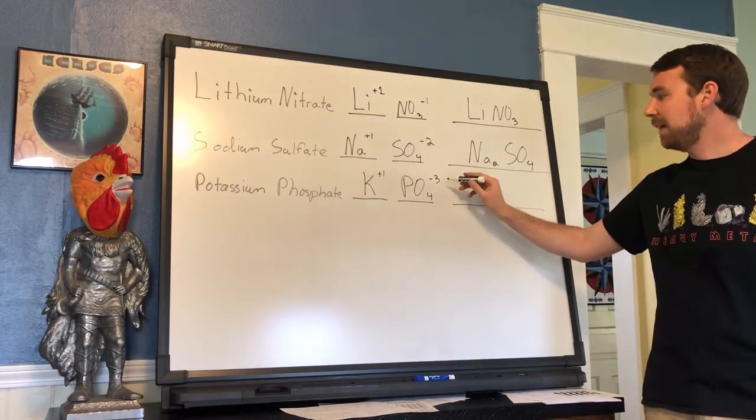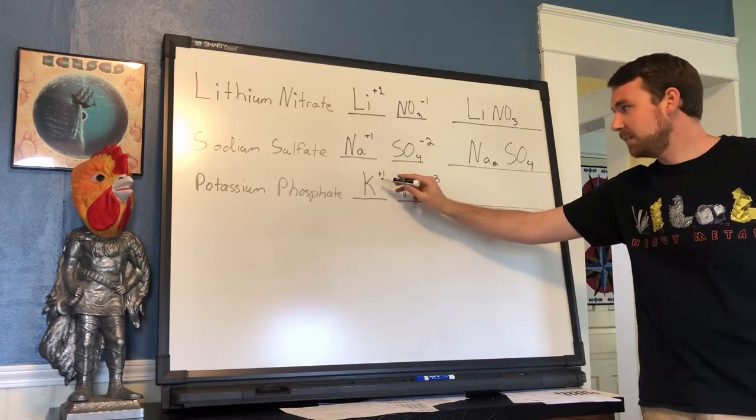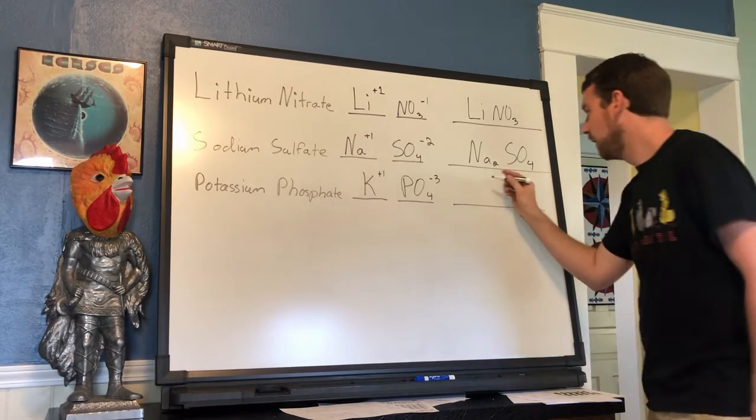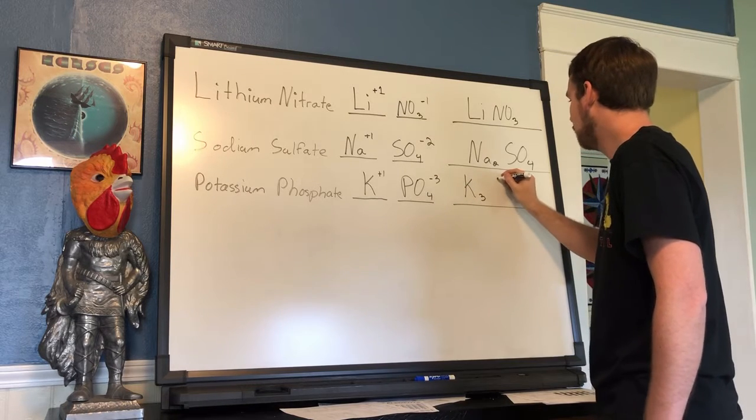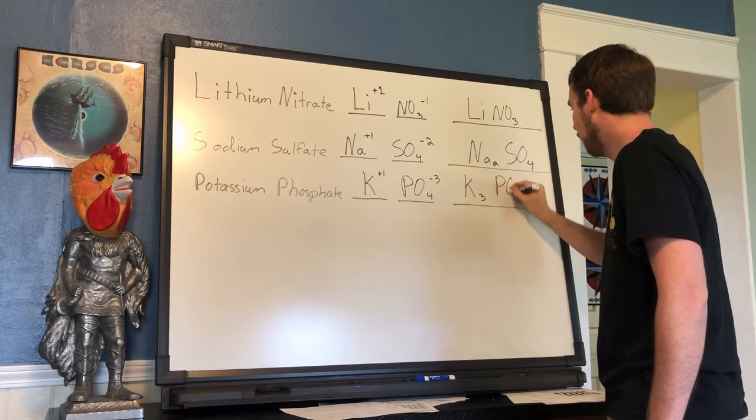So this phosphate has a negative three charge and potassium has a positive one charge. We are going to need three potassium to balance out the charge of a phosphate.